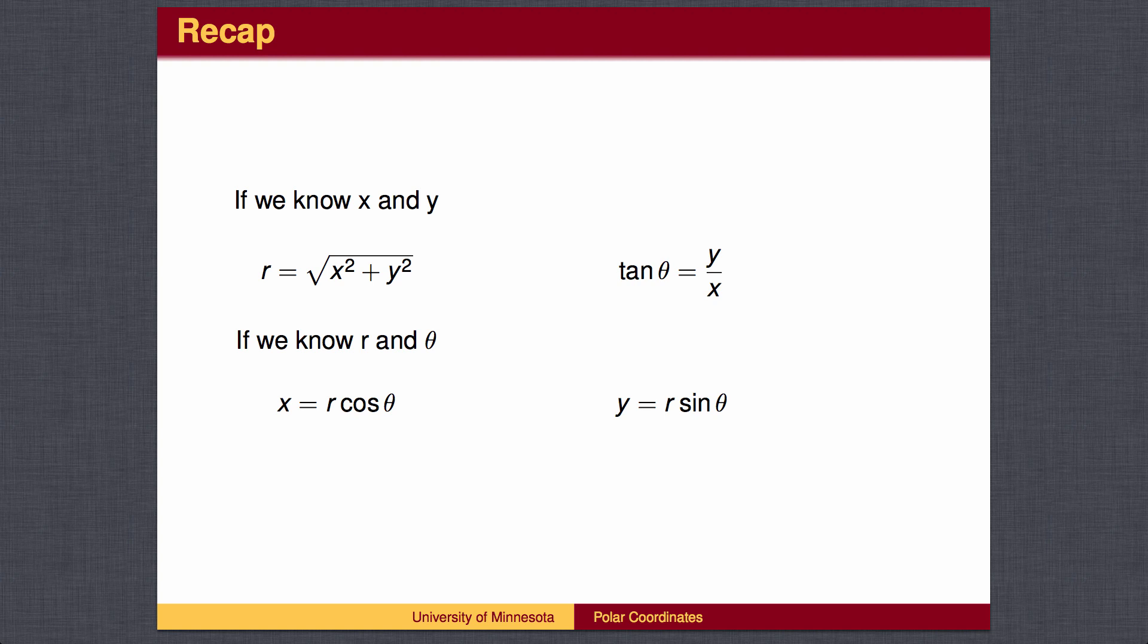To recap, to convert from Cartesian coordinates to polar coordinates, find the length by the Pythagorean theorem and the angle using inverse tangent. To convert from polar coordinates to rectangular coordinates, x is r times the cosine of theta, and y is r times the sine of theta.